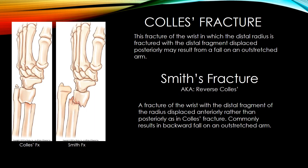Colles' fracture is a fracture of the wrist in which the distal radius is fractured with the distal fragment displaced posteriorly, and may result from a fall on an outstretched arm. Smith's fracture, known as a reverse Colles' fracture, is a fracture of the wrist with the distal fragment of the radius displaced anteriorly rather than posteriorly, and commonly results from a backward fall on an outstretched arm.